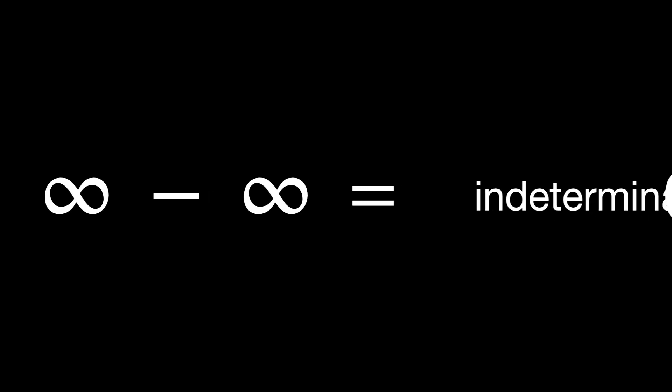Now we have another case: infinity minus infinity. It might be tempting to say that anything minus itself results in zero, but infinity minus infinity doesn't mean the number minus the same number, because infinity doesn't represent any fixed number. So we cannot say that infinity minus infinity equals zero. Its value cannot be determined. Therefore, it is indeterminate.